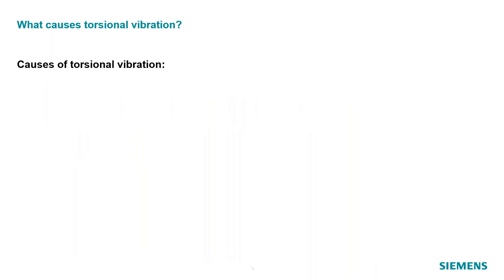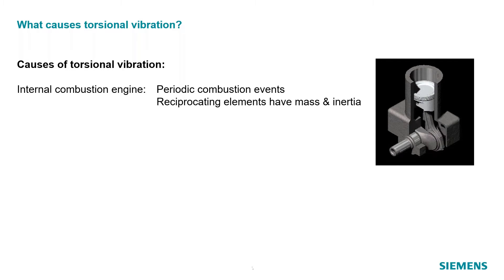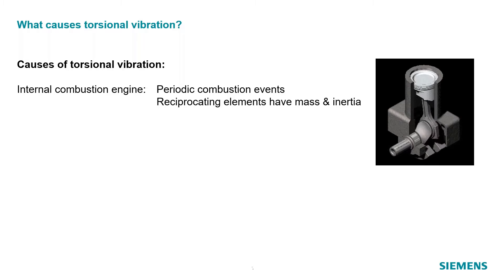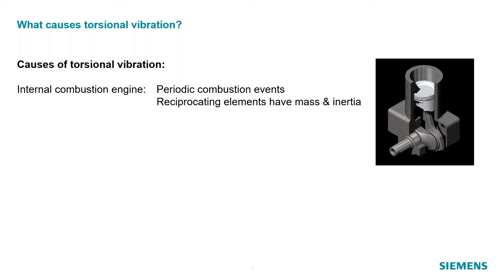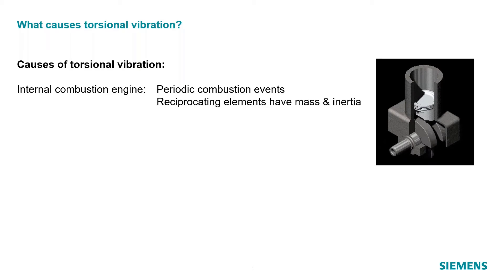So where does torsional vibration come from? You're going to notice something consistent through all of these sources, and that's things stopping and starting or moving back and forth. If you have an internal combustion engine, you have periodic explosions happening — detonation events in each of the cylinders — and that's happening once every two revolutions of the crankshaft for a given cylinder. You have these torque fluctuations; it does not produce a consistent amount of torque, it's actually coming in pulses. Just like bumps on a road inducing vibration in a linear vibration system, torque pulses or torque fluctuation causes torsional vibration in a rotational system.